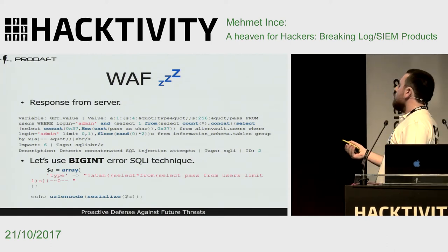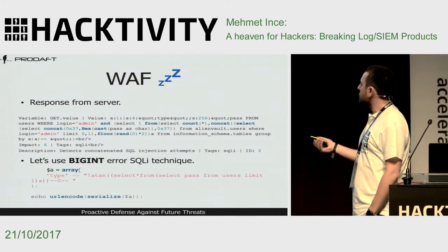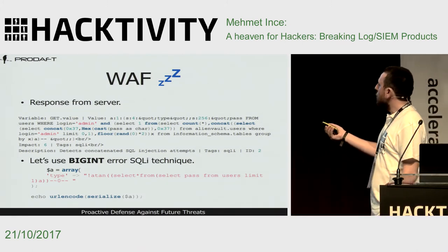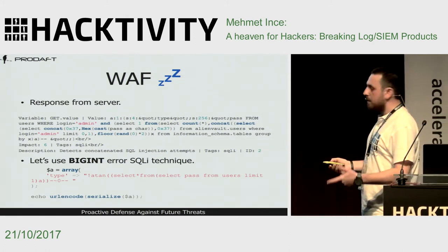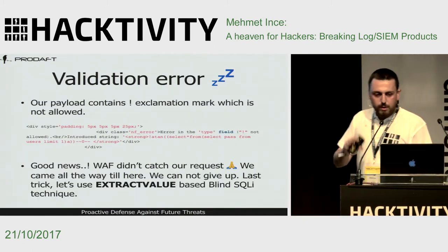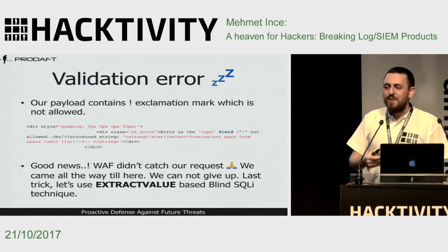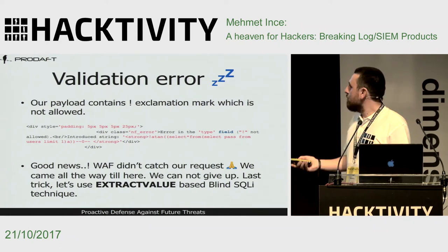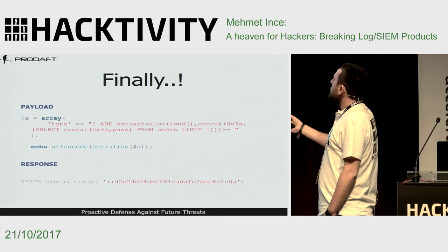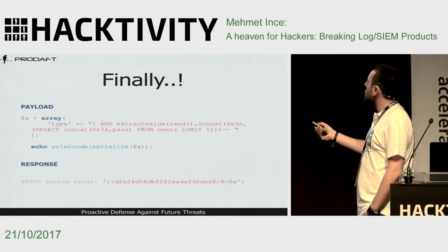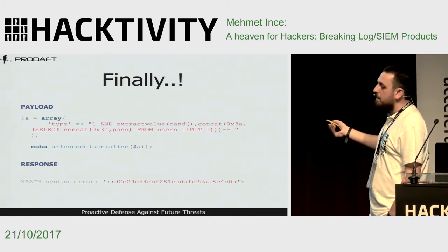We decided to change the SQL injection approach and use a big integer error technique — the exclamation mark is very important for this. We changed our query, but input validation blocked the exclamation mark. So we came up with extractvalue(), which does the same thing another way. This is how we bypassed the web application firewall — we extracted data from the users table, first row, password field. And there is the password.